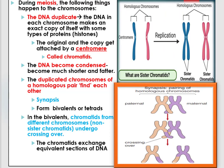The second event that can happen during meiosis is that the DNA becomes condensed, meaning it becomes much shorter and fatter. The third event is that the duplicated chromosomes of a homologous pair find each other — what we call synapsis — or pairing of homologous chromosomes to form bivalents or tetrads.